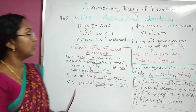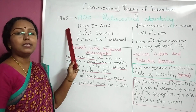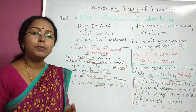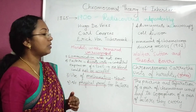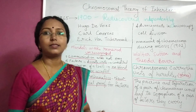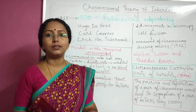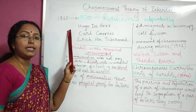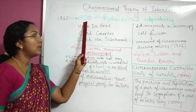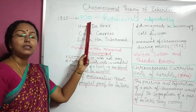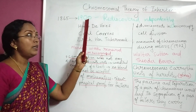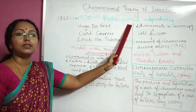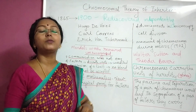Mendel published his work in the year 1865, but his work remained unrecognized till 1900. In 1900, Mendel's works were rediscovered, and there begins the chromosomal theory of inheritance.